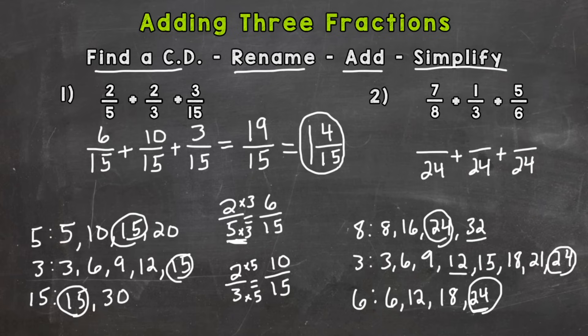So time to rename these fractions with a denominator of 24. So I'm going to fit it in down here where I can. Let's do 7 8ths first. 7 8ths equals how many 24ths? Well I know 8 times 3 is 24. So 7 times 3 is 21. So 7 8ths is 21 24ths. Let's do 1 3rd. 1 3rd equals how many 24ths? Well 3 times 8 is 24. 1 times 8 is 8.